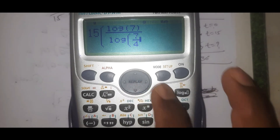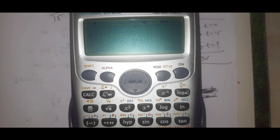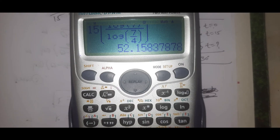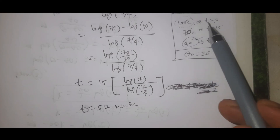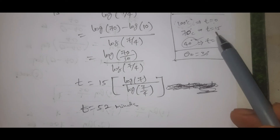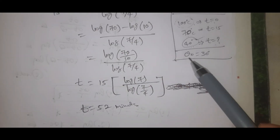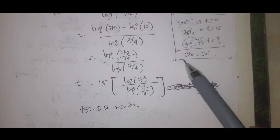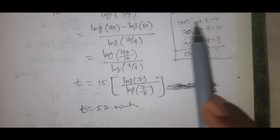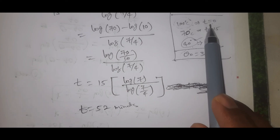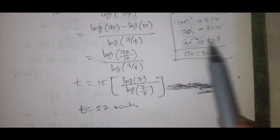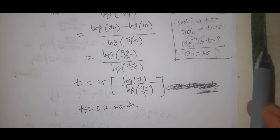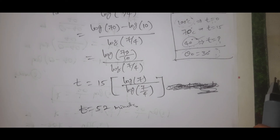7 divided by 4 gives t equal to 52.15 minutes. So the temperature will reach 40 degrees at t equal to 52.15 minutes. To summarize: the body cools from 100 degrees to 70 degrees in 15 minutes, surrounding temperature is 30 degrees, and it reaches 40 degrees at approximately 52.15 minutes. Please subscribe to my channel, like and share. Thank you.